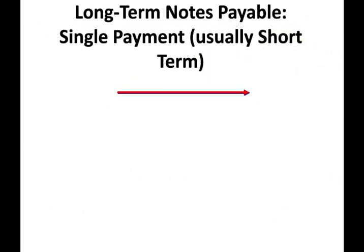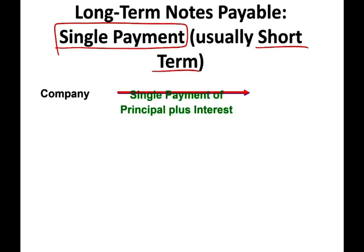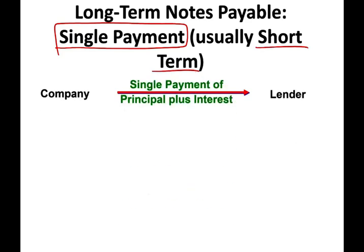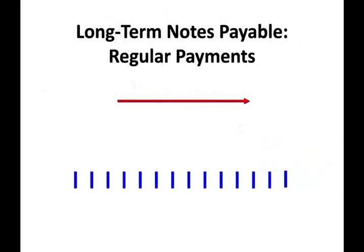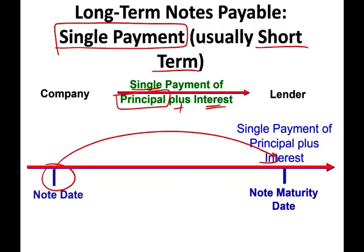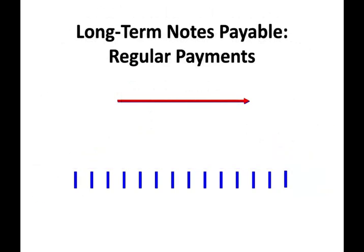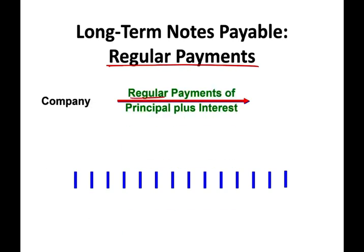Now we have what's called long-term notes payable, where you make a series of payments. There are also short-term notes where you borrow money and make one single payment that includes both the original amount plus the interest back to the lender. What we're going to be looking at today is long-term notes payable, where the company borrows money and makes regular payments of principal plus interest — multiple payments back to the lender.